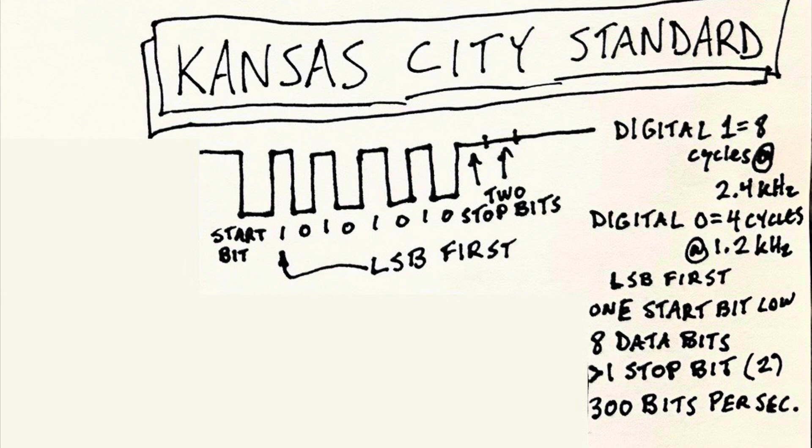In 1976, a whole bunch of computer gurus from the early computer age, including Bill Gates, got together at a symposium in Kansas City to come up with a standard for recording digital data on plain old audio cassettes that everybody could afford. They came up with the Kansas City Standard, which basically worked as follows: digital ones were recorded as 2.8 cycles of a 2.4 kilohertz signal.